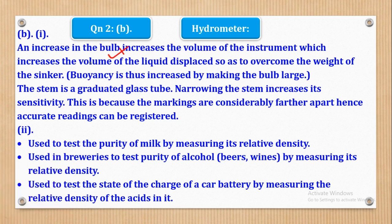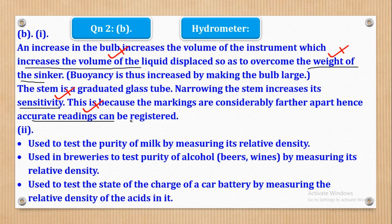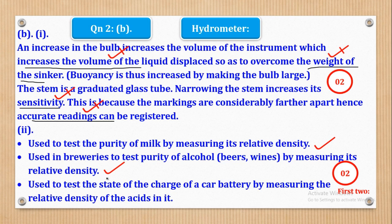For marking part B: increasing the volume of liquid displaced earns half a mark, and overcoming the weight of the sinker earns another half mark. For the narrow stem, stating that sensitivity increases earns half a mark, and giving the reason earns another half mark. For Roman 2, only the first two examples are marked, so be precise and to the point.